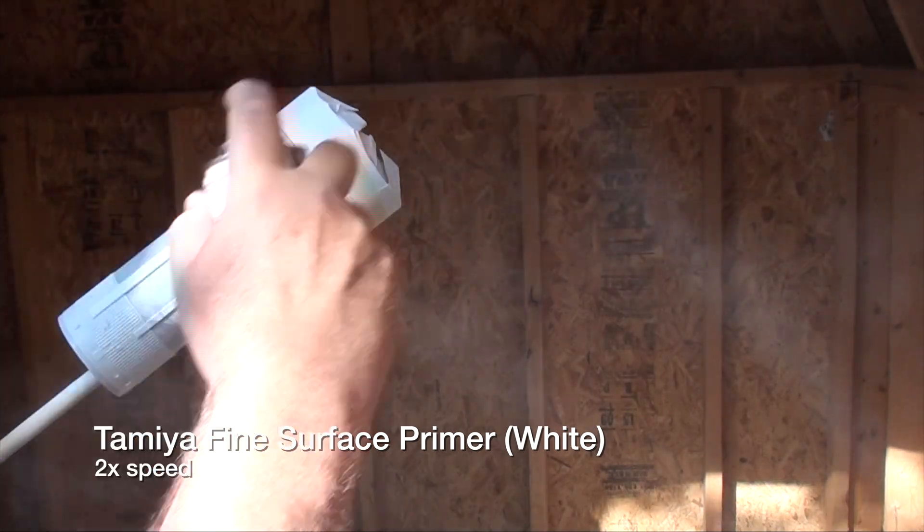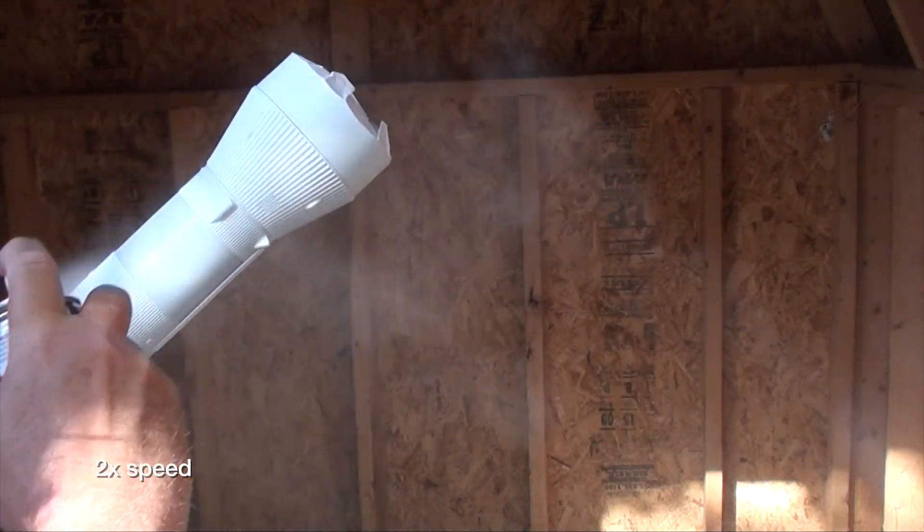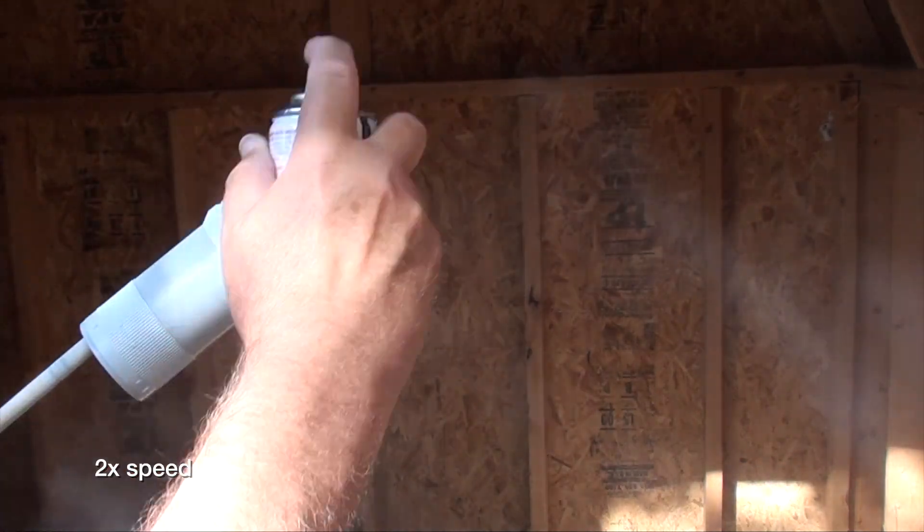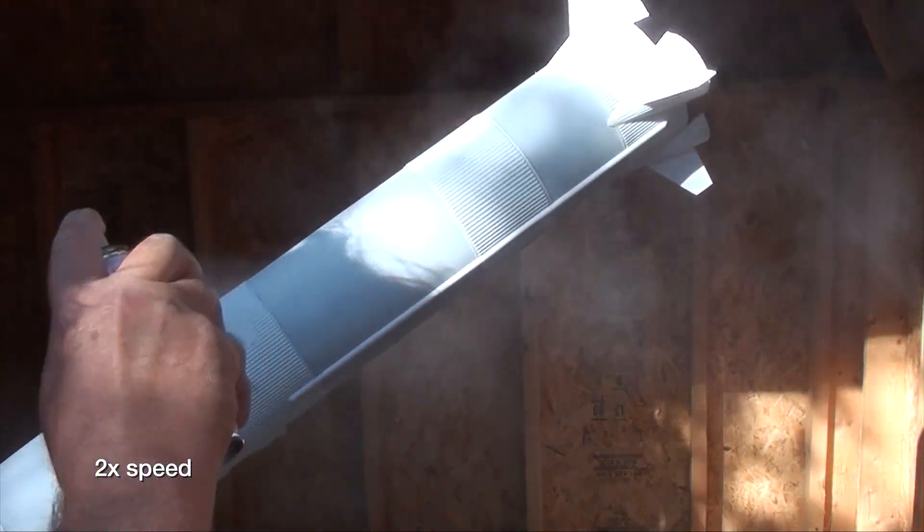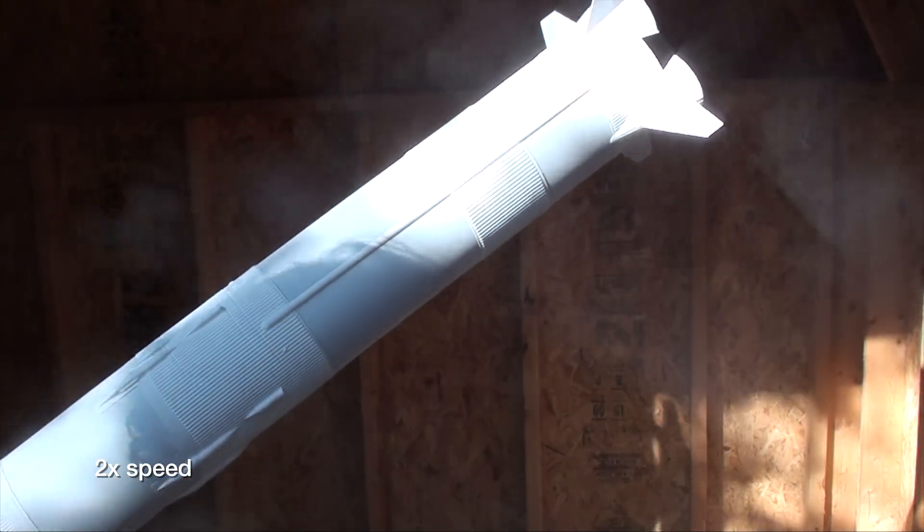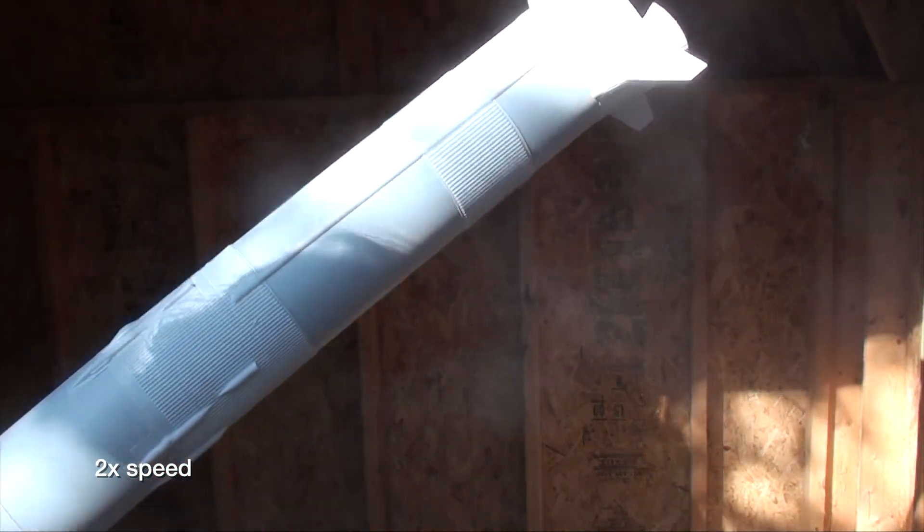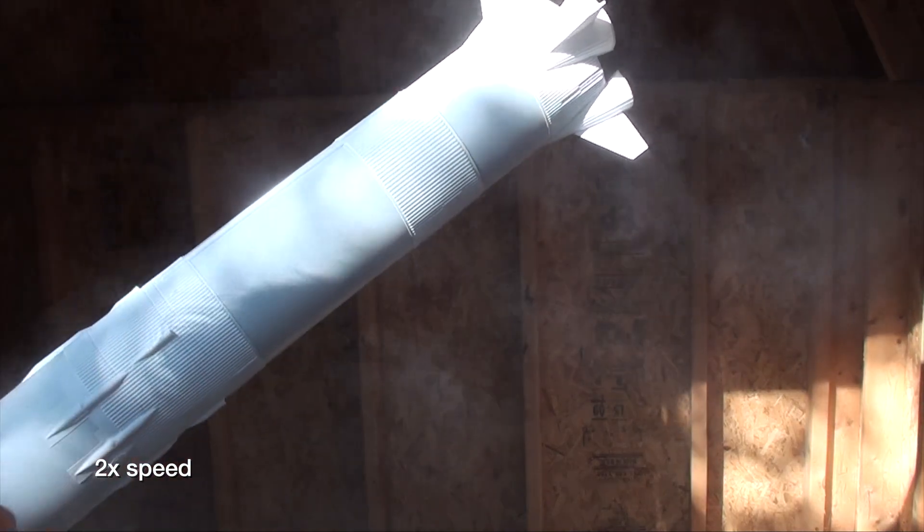We are back in our paint booth to apply the primer. As before, we're using long strokes that begin and end off of the model. We'll do three light coats on each assembly, the upper and the lower. With the primer, there's no need to make the final primer result opaque, as the final color coats are going to do that job for us.